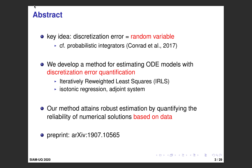The key idea of our study is to consider discretization error as a random variable. This idea is motivated from probabilistic numerics, like the study by Conrad et al. on probabilistic integrators of ODE. Based on this key idea, we develop a method for estimating ODE models with discretization error quantification, using iteratively reweighted least squares, isotonic regression, and the adjoint system.